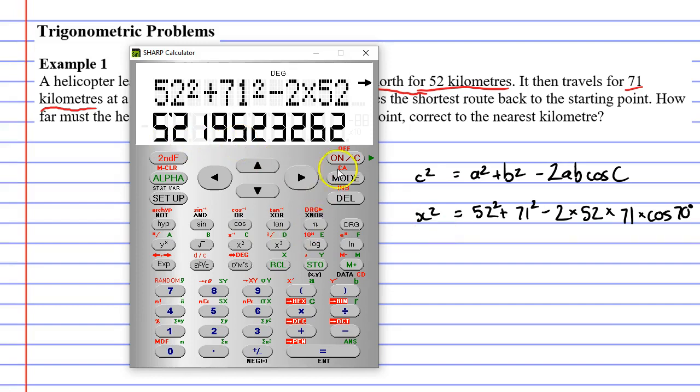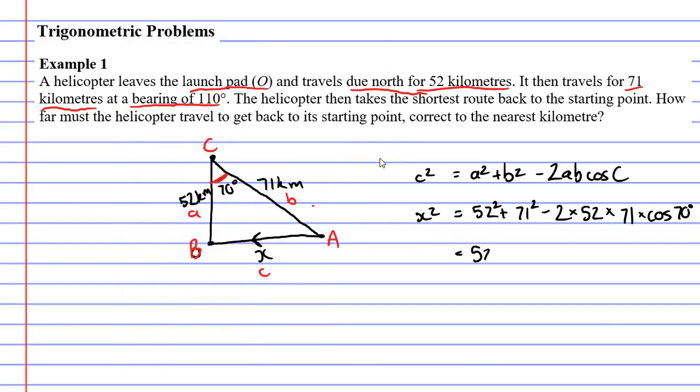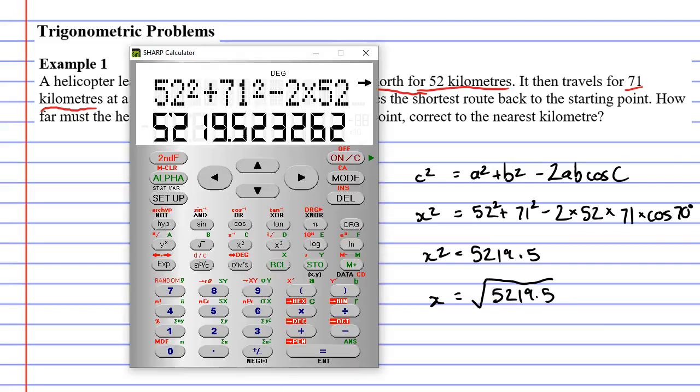And this is what x² equals. Remembering we're trying to find what x must equal, so we're going to find the square root of this number. Now what's useful here is we haven't cleared our calculator - we've kept the number in there, because it's much better if we find the square root of a number that has not been rounded.